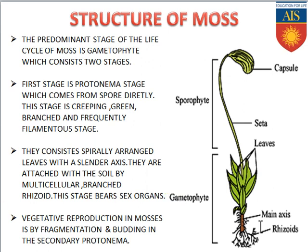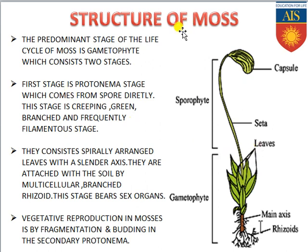Now we will enter the structure of moss. The lower portion is the gametophytic phase containing leaves, main axis, and rhizoids. The upper portion is the sporophytic phase containing the seta and capsule, with the foot concealed within the leaves. The predominant stage of the moss life cycle is the gametophytic stage, consisting of two stages: protonema stage and leafy stage.